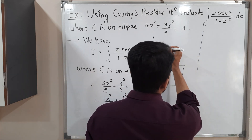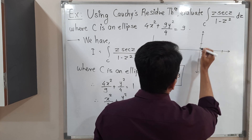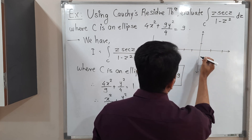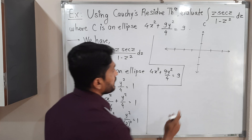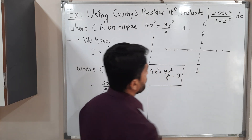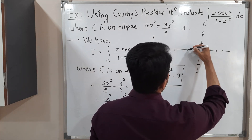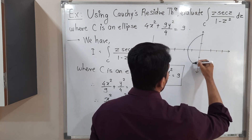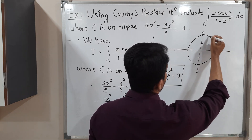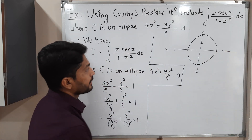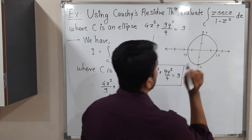This is the imaginary axis and this is the real axis. Taking some scaling: it cuts the x-axis at 3/2, which is 1.5, and at −1.5. It cuts the y-axis at 2 and −2. So we draw the ellipse through these points: 1.5, −1.5 on the real axis and 2, −2 on the imaginary axis. This is a rough sketch of the ellipse.